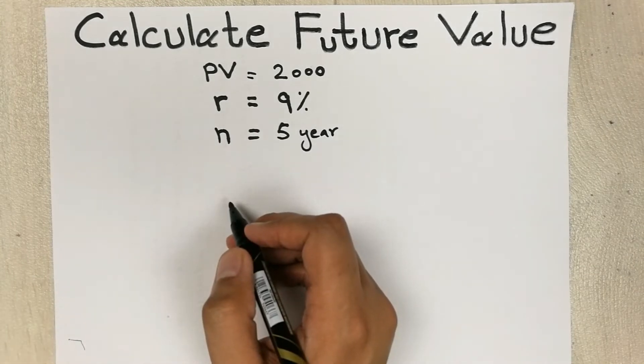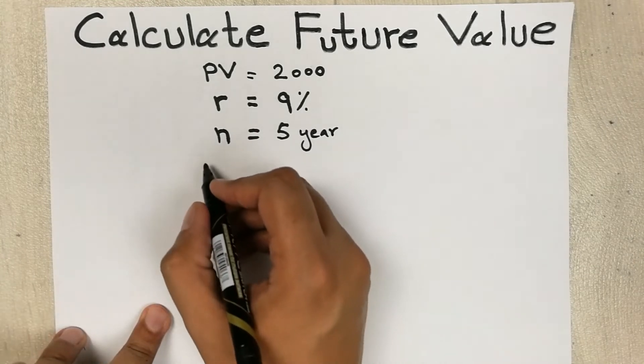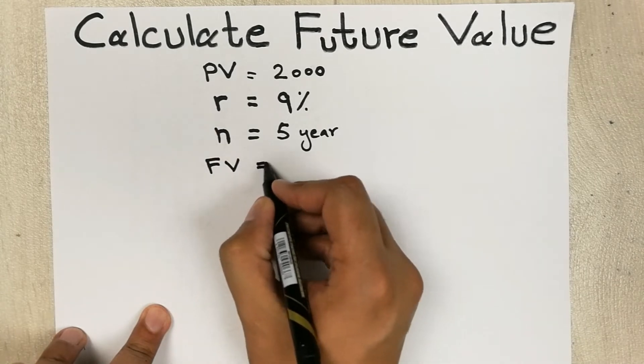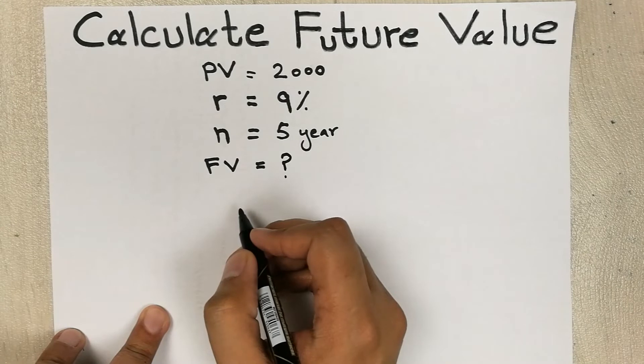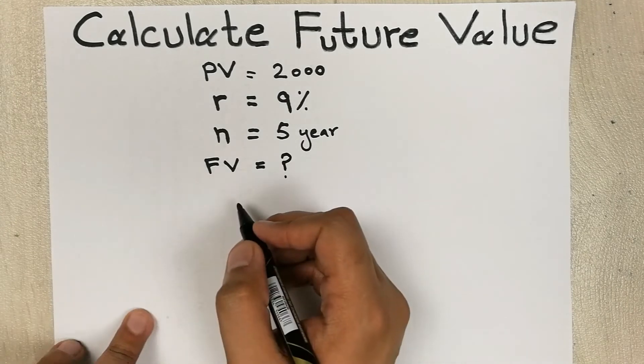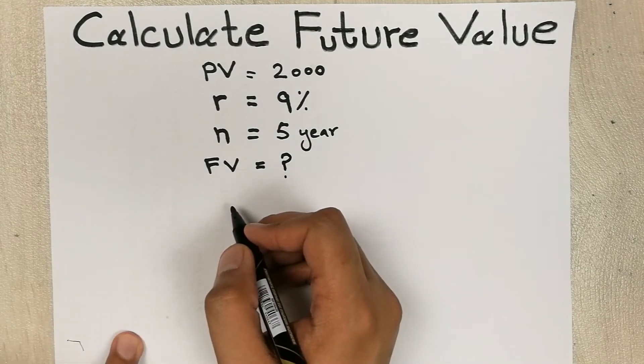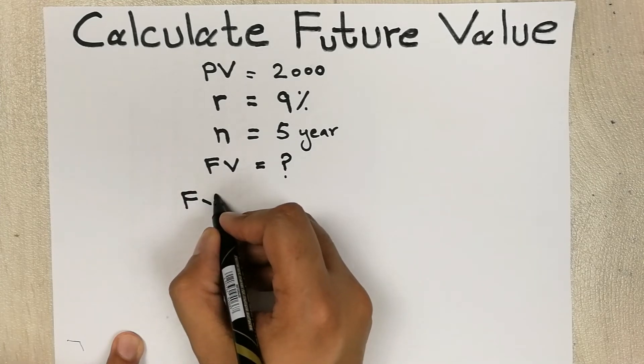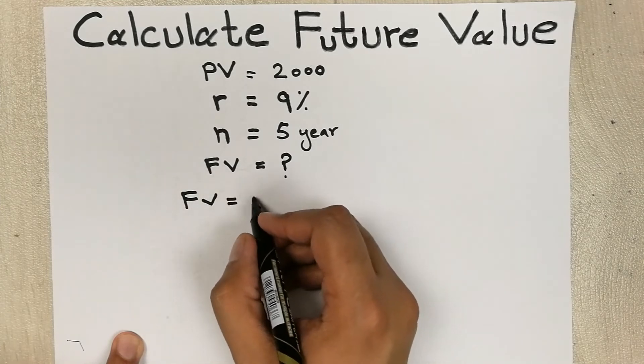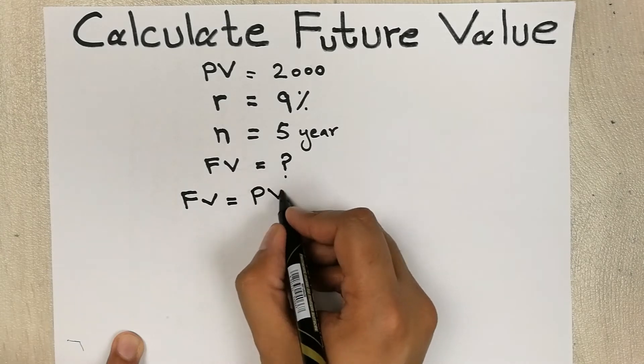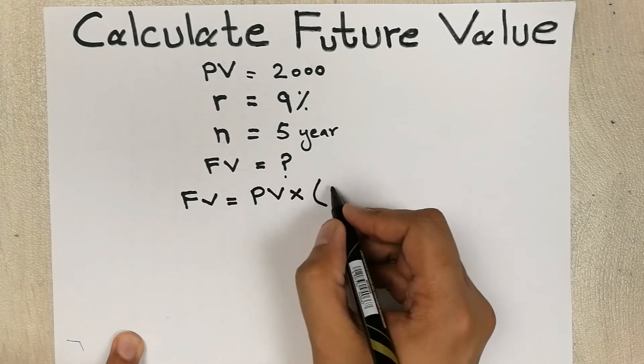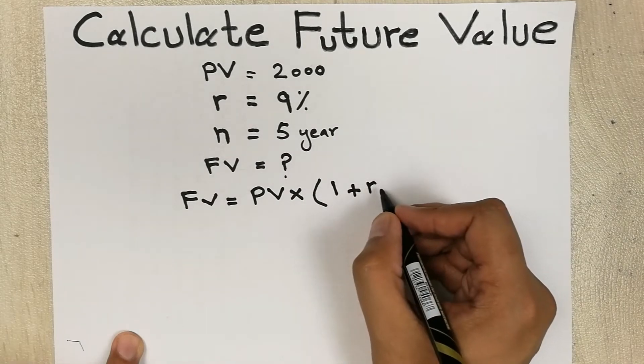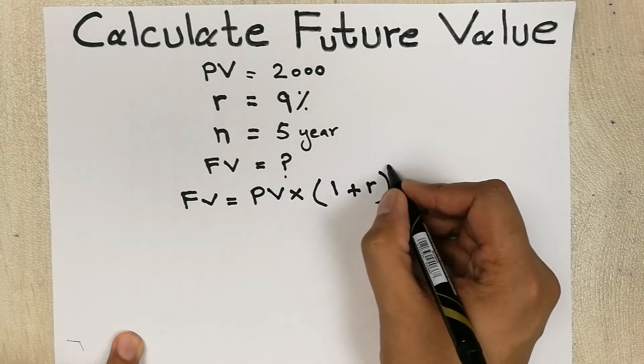Now we want to find out what is our future value. We will put the formula, and the formula is FV equals to PV multiply bracket one plus r raised to the power n.